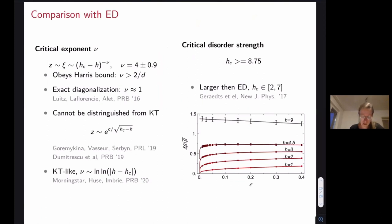A quick comparison with ED on the same Hamiltonian. We get much larger critical exponents that are so large that they're essentially compatible with the KT or KT-like type of the transition of MBL as compared to the ED, and also our lower bound on the critical disorder strength is also larger than what was obtained with ED.